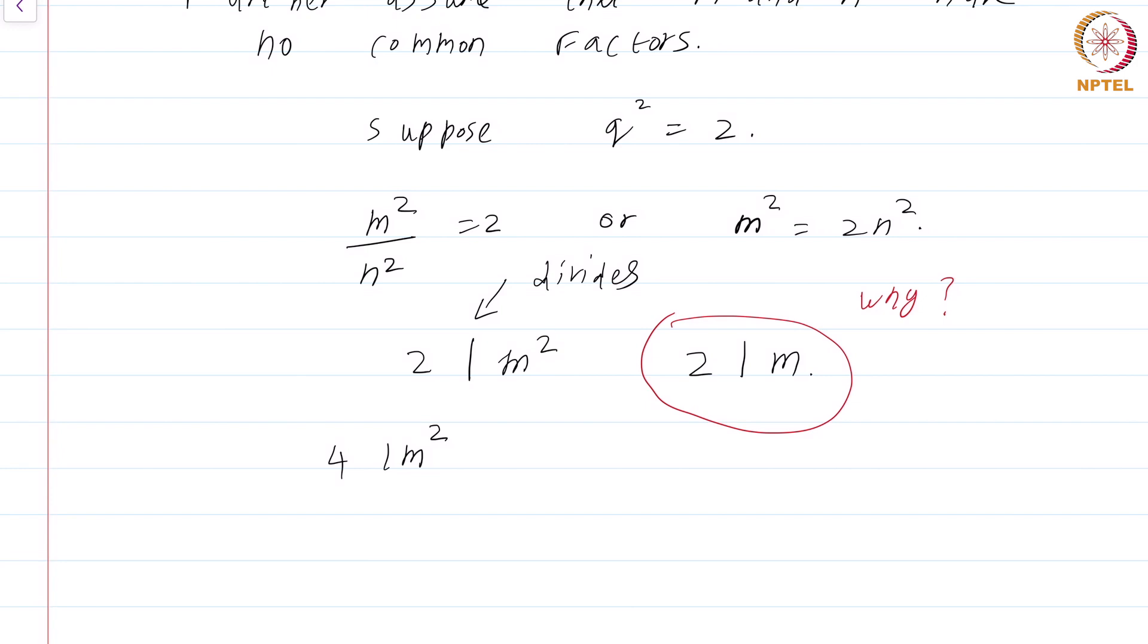The LHS here is divisible by 4. That means the RHS must also be divisible by 4. Now, there is already a 2 coming from 2n². Putting all this together, we get 2 must divide n².